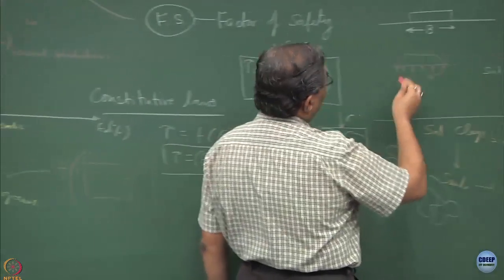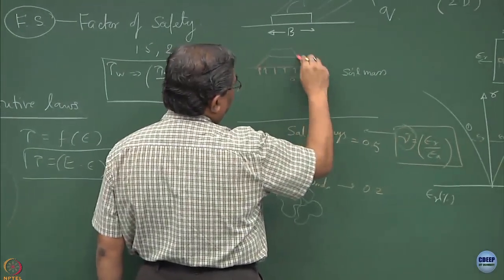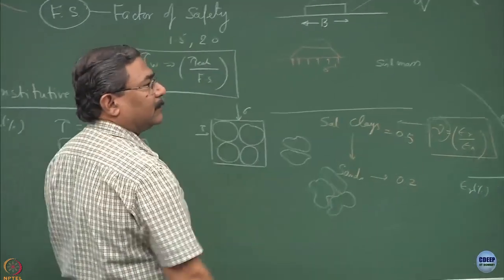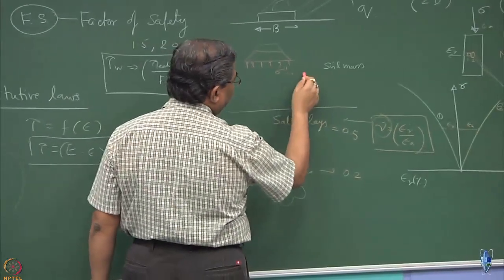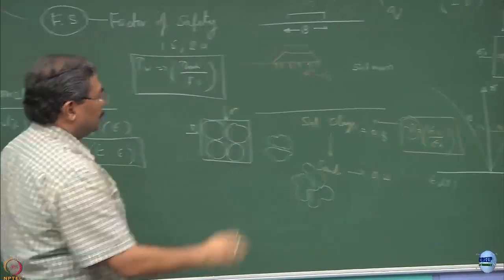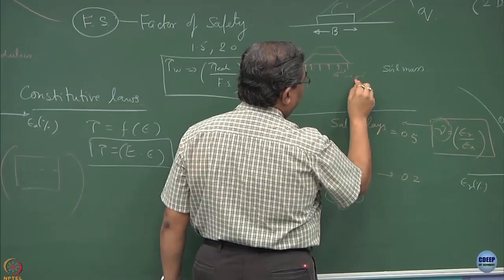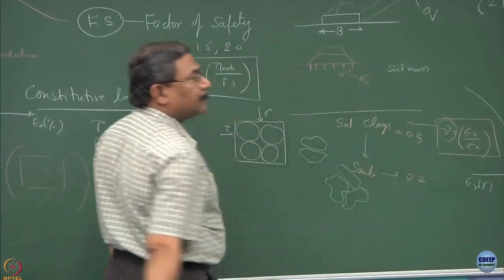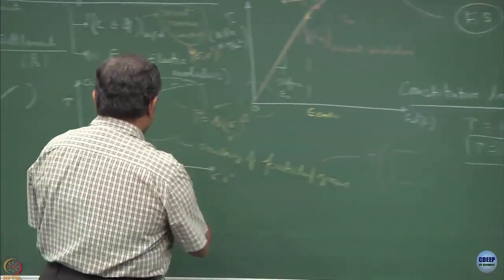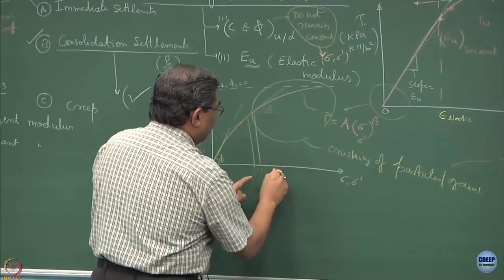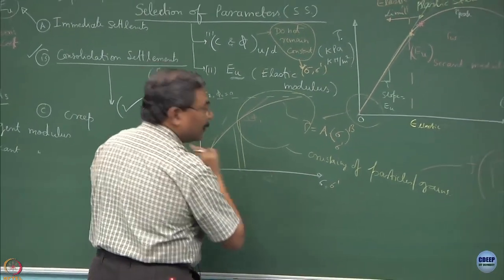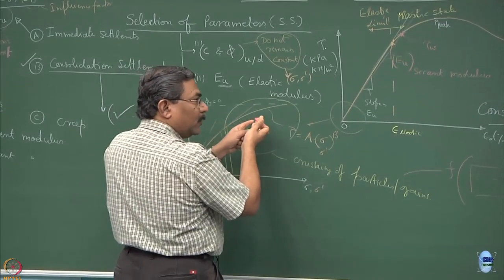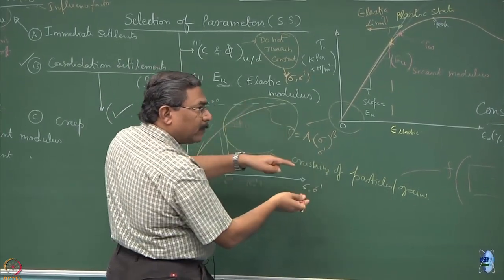So from this stage, if I want to lift it, let us say because of flooding, I have to lift the embankment. So what is going to happen? The sigma 1 prime becomes sigma a prime. So this sigma a prime is going to be from sigma prime to sigma a prime. So c phi is getting converted slowly and slowly to maximum c and less phi.